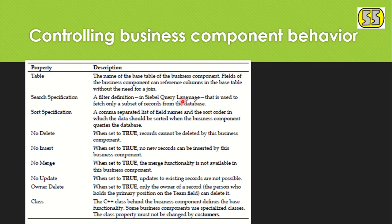Search Specification filters records so the BC shows only the records we want. Sort Specification defines the order in which records are displayed — for example, sorted by most recently created, or alphabetically by name so 'A' records appear first, 'B' second, and so on.